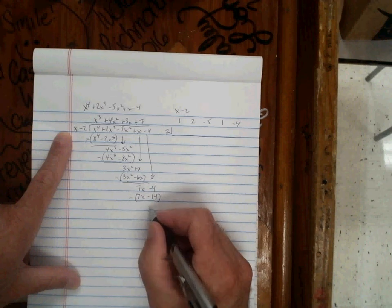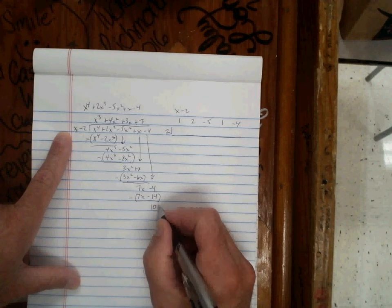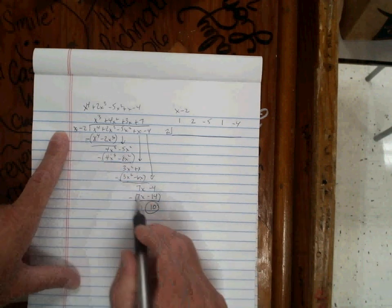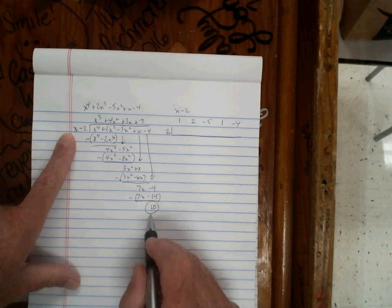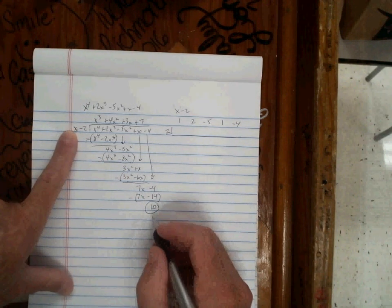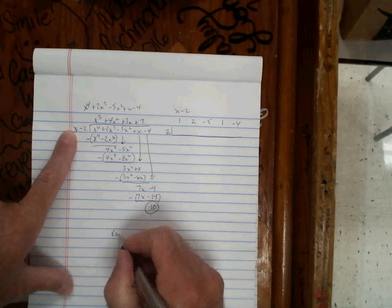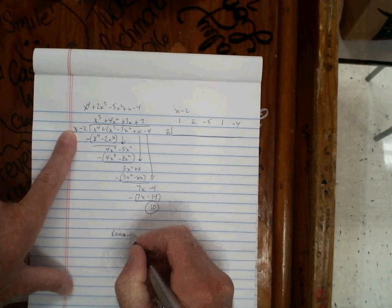Negative 4 minus negative 14 makes positive 10. My remainder, because the degree here is 0, the degree here is 1, the degree is lower, makes my remainder. So my remainder is 10. And that's the answer we're looking for. But I'm going to go ahead and work this synthetic division too.